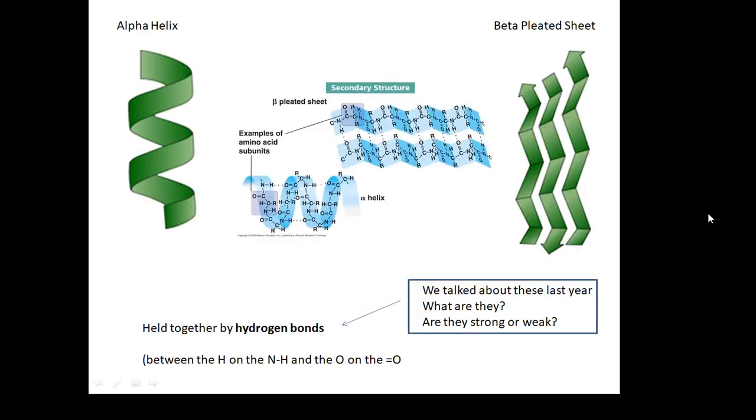The secondary structure is called alpha helixes, which is kind of coiled up like a spiral, and then your beta pleated sheets. These are held together by hydrogen bonds. You should remember what hydrogen bonds are.